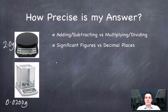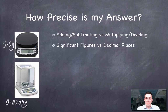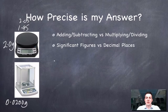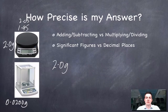When adding or subtracting, my answer can only be given to the same number of decimal places as the piece of data with the fewest decimal places. This number has only one decimal place, while the other has four. Since we don't know if 2.0 grams is actually 1.95 or 2.05, the extra decimal places are insignificant. So the sum would be given as 2.0 grams — only one decimal place.